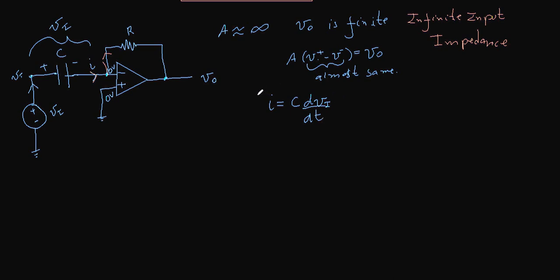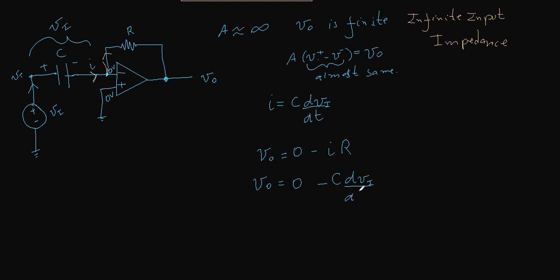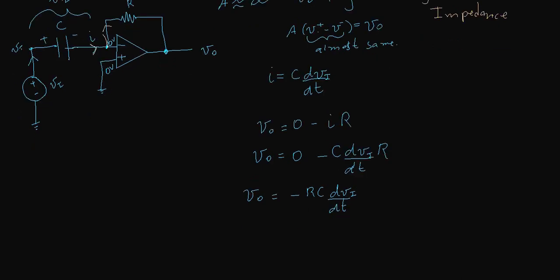The current C dVI/dt cannot go into the op-amp, so it flows through the feedback resistor R. V_out equals zero minus the current I times R. Since I equals C dVI/dt, we get V_out equals minus RC times dVI/dt — and we have our op-amp differentiator.